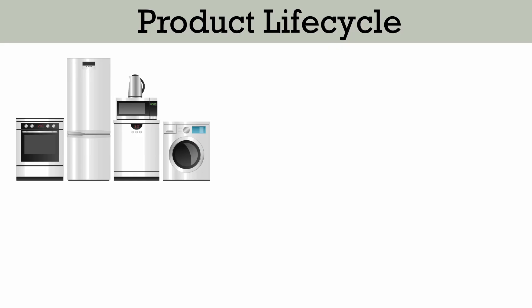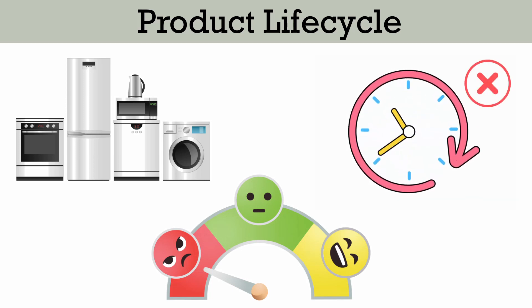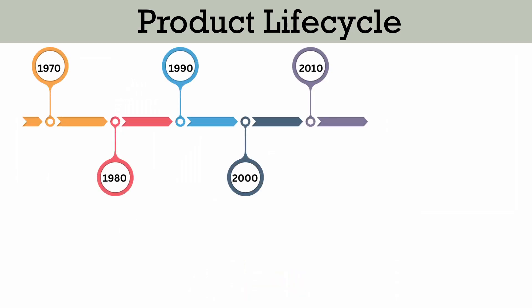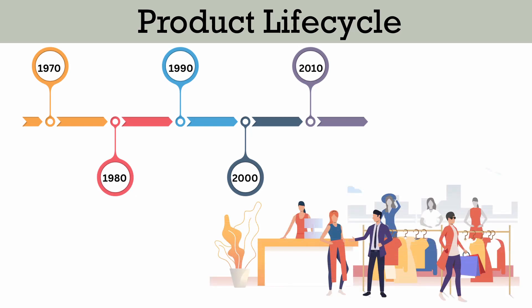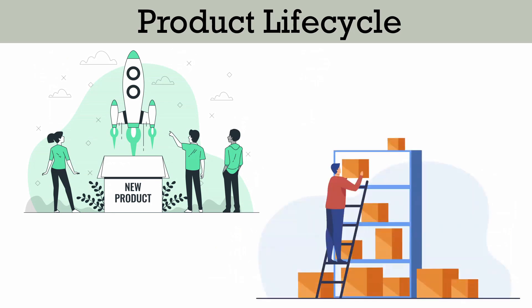We all are aware of the fact that no product can serve and satisfy the needs and wants of the consumers for an indefinite period of time. Hence its sales as well as profit vary over a period of time. In simple words, product life cycle is the lifespan of the product in relation to its demand. Product life cycle refers to the time horizon when the product is launched in the market until it is removed from the shelves.